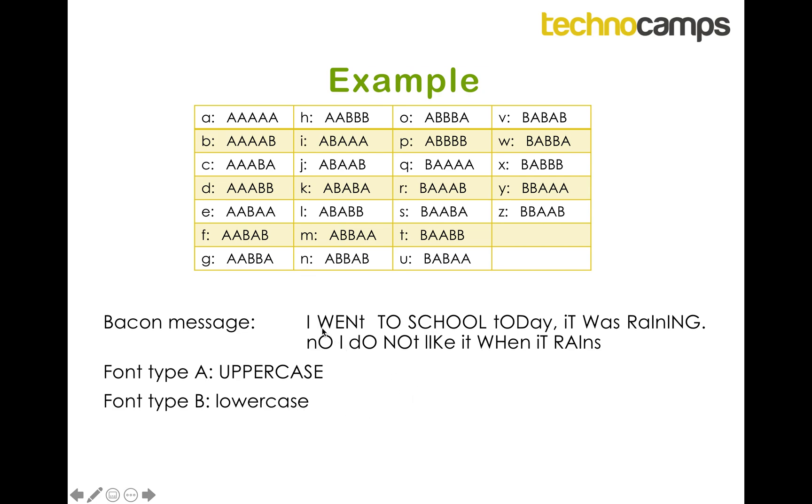So we do step one, we break it up into a five letter chunk, so that's one, two, three, four, five, and we convert these five letters into either A's or B's if they're uppercase or lowercase. So we've got an uppercase I, so that'll be an A,